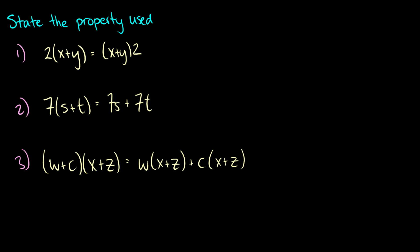Okay, hopefully you had some time to do that. In the first one, we have 2 times x plus y is equal to x plus y times 2. Well, all we did is flip the order around. So this is going to be the commutative property because when you take the commutative property, you just flip the order around. What about this 7 times s plus t is equal to 7s plus 7t? Well, this just looks like the distribution property or the distributed property. So they just distributed them.